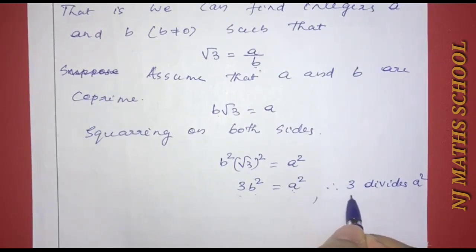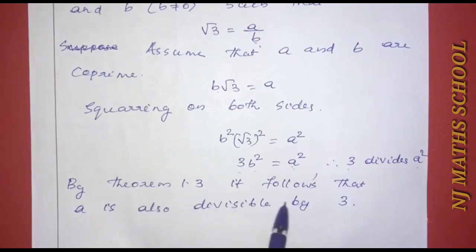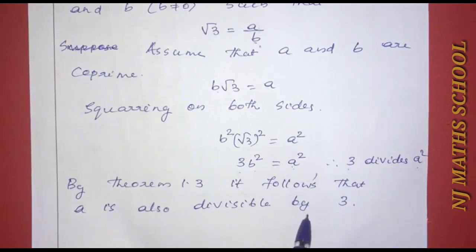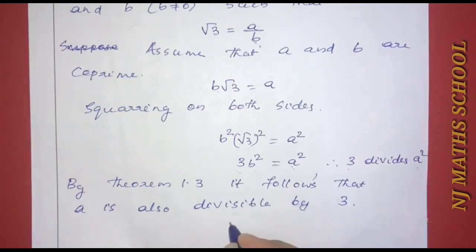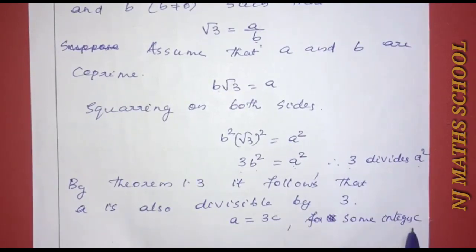Applying the theorem, since 3 is a prime number and 3 divides a squared, by theorem 1.3 it follows that 3 also divides a. So we can write a is equal to 3c for some integer c.